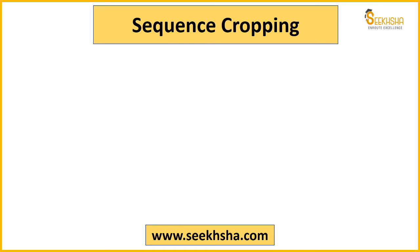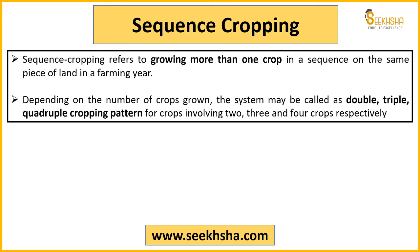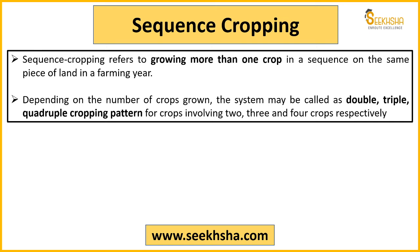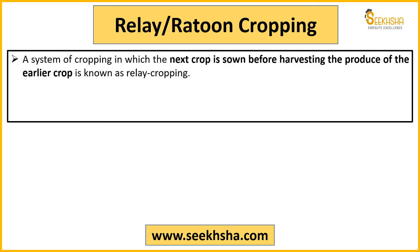Sequence cropping means you grow crops in a sequence on a piece of land throughout the farming year, depending on how many crops you want to grow — double crops, triple crops, or four crops. It is completely dependent on the farmer and the land or farmer requirement. It is also called relay cropping.